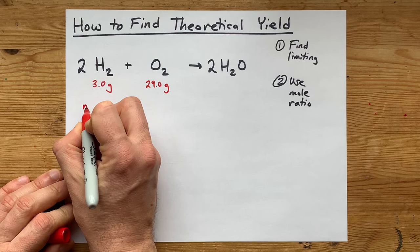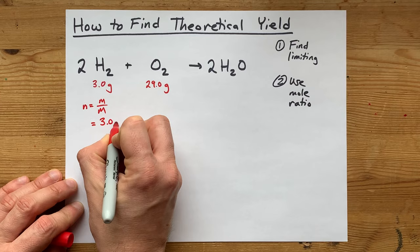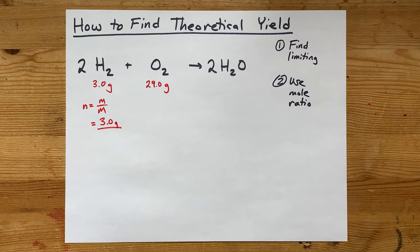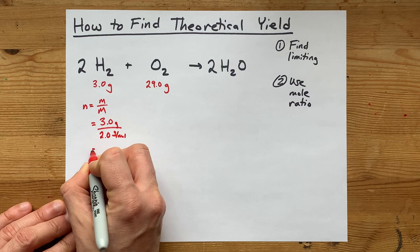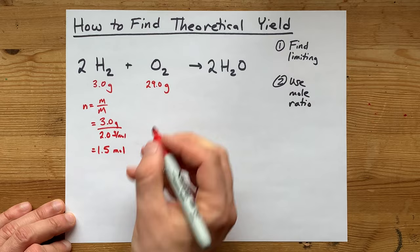You need to know the numbers of moles of each of these. The number of moles is mass divided by molar mass. Here I have three grams, and I'm dividing it by the molar mass of H2. Each H weighs 1.0 grams per mole, but there are two of them per molecule. That's 2.0 grams per mole, which leaves me with 1.5 moles of the hydrogen.